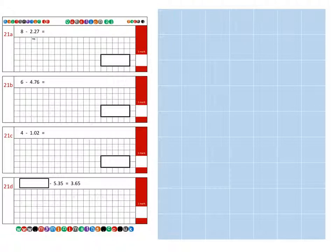So first of all we're going to look at question 21a. Now there are a number of different ways we can do this, but to begin with we'll have a look at the column method. So if we write our 8 units and 2.27.